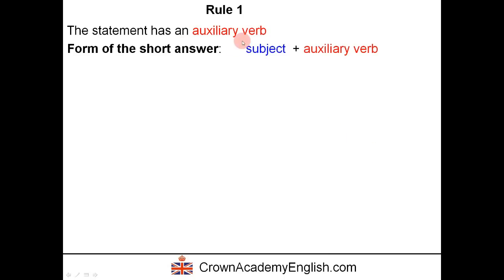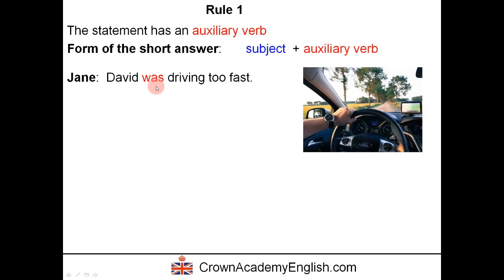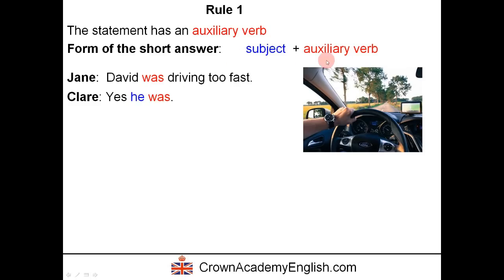Let's look at each rule in detail. Rule one: if the statement has an auxiliary verb, the form of the short answer is subject followed by auxiliary verb. Example — Jane says: David was driving too fast. Here 'was' is the auxiliary verb. If Claire agrees, she says: yes, he was. 'He' is the subject and 'was' is the auxiliary verb.